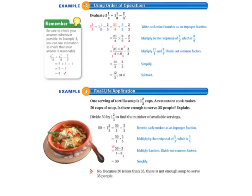Now we're going to turn the page and look at page 73, example 3. Let's look at the remember box, because it's a good thing to remember. It says to be sure to check your answers whenever possible. In example 3, you can use estimation to check that your answer is reasonable.